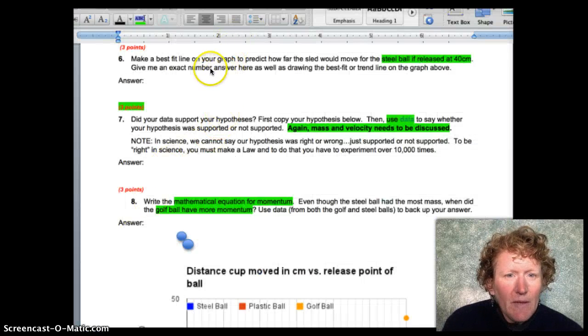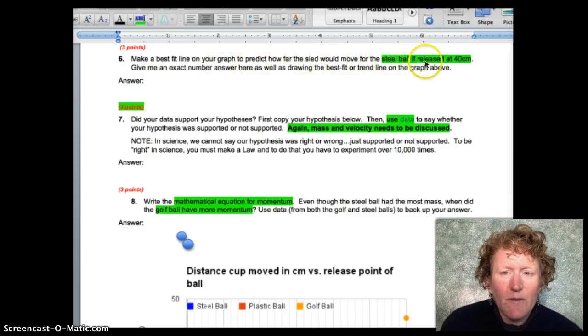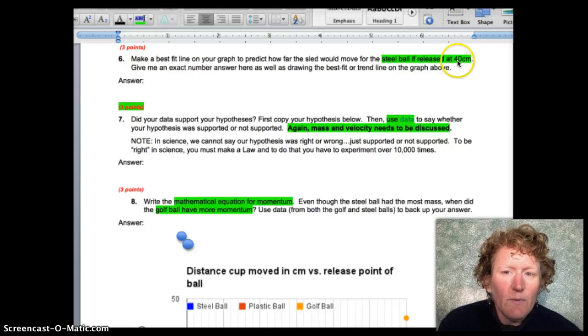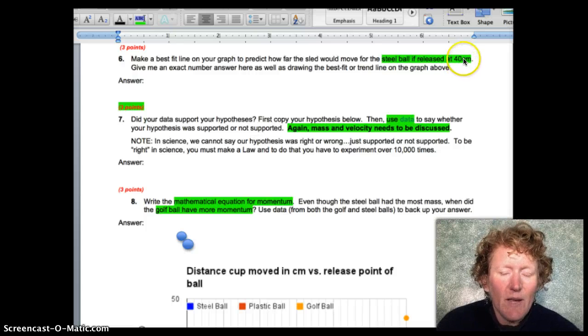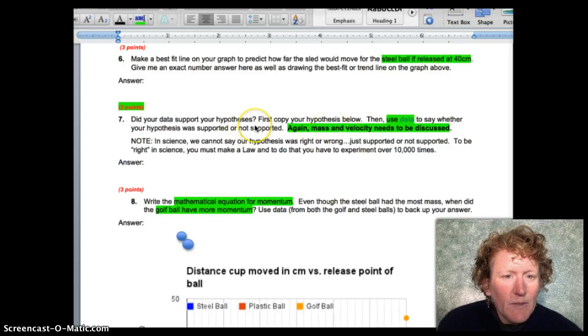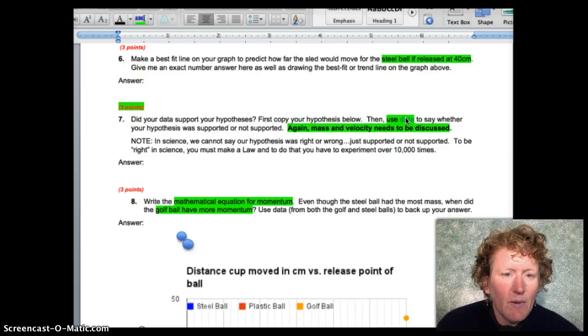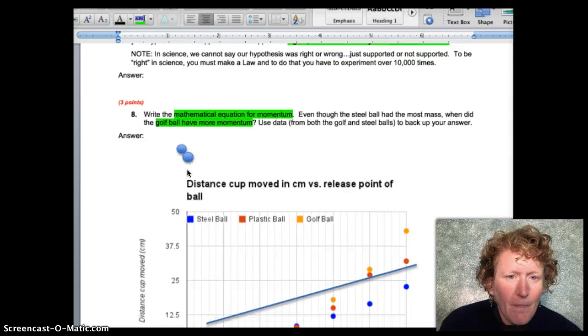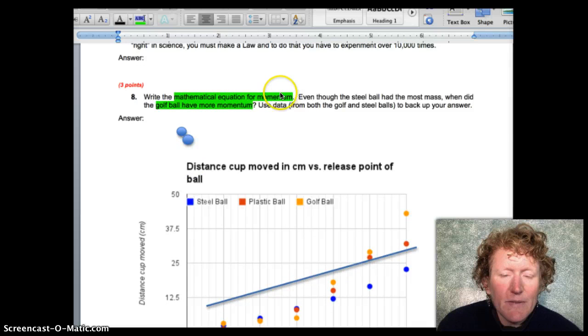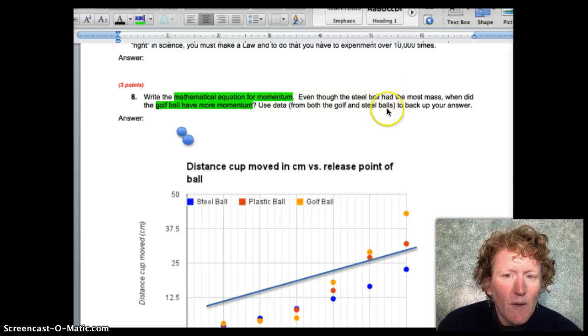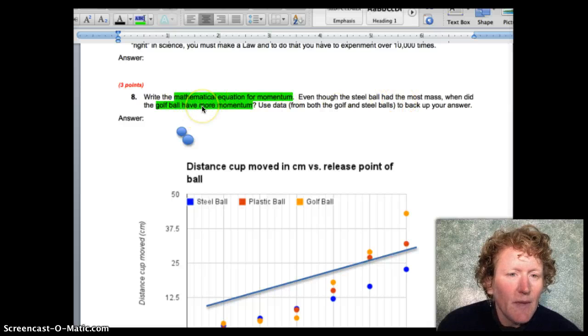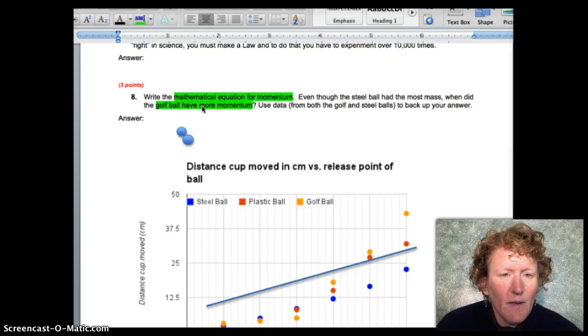So we're back to your lab sheet here. You can make a best fit line in your graph to predict how far the sled would move if the steel ball was released from 40 centimeters. Remember, you don't actually do this. You only release up to 35 and then you make a best fit line to predict what would happen if you released the steel ball from 40 centimeters. For number seven, you want to use data in the answer to this question. You want to use mass and velocity and use data from your graph or your data table in this answer. I should see the words mass and velocity and I should see specific numbers from your graph. For number eight, you should write the mathematical equation for momentum. We talked about that a bit earlier in this video, and even though the steel ball had the most mass, when did the golf ball have more momentum? Think about what we talked about with the bowling ball and the pencil earlier in this video.